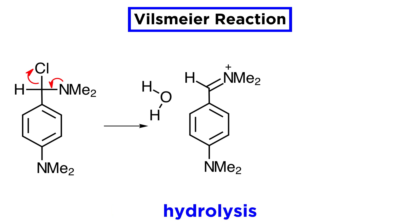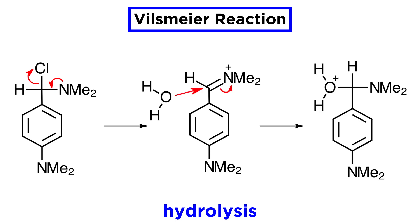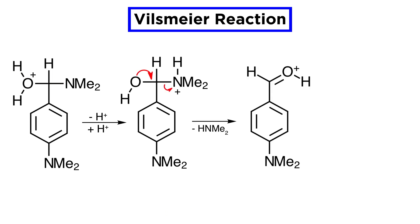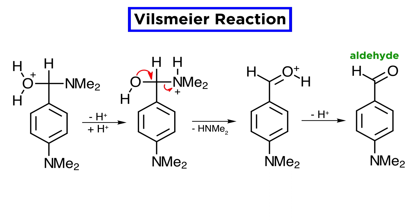However, such intermediates are not stable to work up, and they will readily hydrolyze. This should be familiar, but just to be thorough: water attacks and neutralizes the nitrogen, proton transfers occur, then a lone pair on oxygen kicks off the amine. One more proton transfer, and we are left with the aldehyde, which is the product of the reaction.